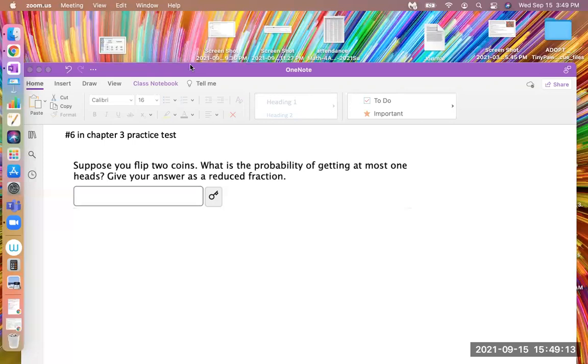Hi class, this is number six on chapter three practice test. Suppose you flip two coins. What is the probability of getting at most one heads? Give the answer as a reduced fraction.